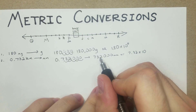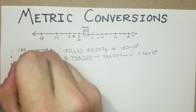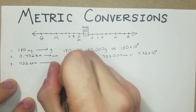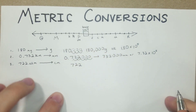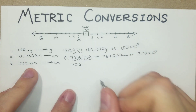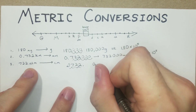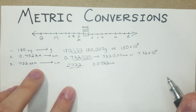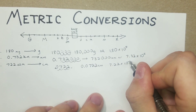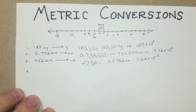Number three: convert 722 micrometers to centimeters. Write out 722 first. Micro is way over here, and we're trying to get to centi — that's one, two, three, four spaces to the left. Moving four spaces left gives us 0.0722 centimeters, or 7.22 times 10 to the negative 2, because we're making the number smaller.